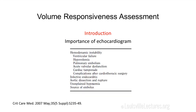The importance of echocardiography in the assessment and management of shock cannot be overemphasized. With echocardiography you can pick up ventricular failure, hypovolemia, pulmonary embolism, aortic valvular dysfunction, cardiac tamponade, infective endocarditis, and aortic dissection. It is very important to use echocardiography as a point-of-care test when evaluating a patient in shock.